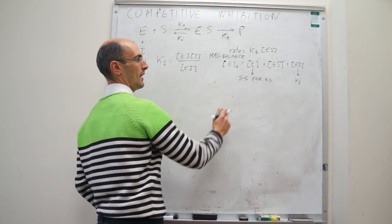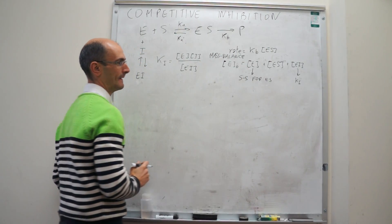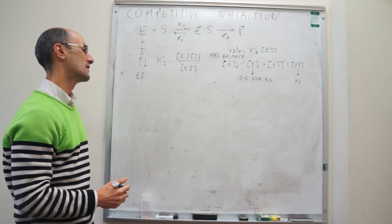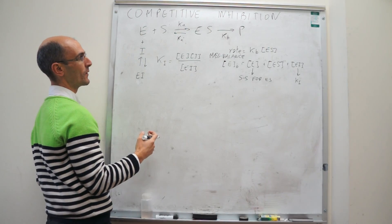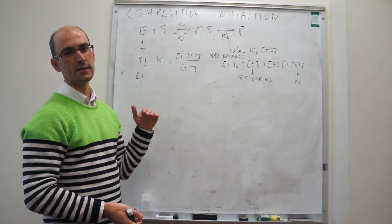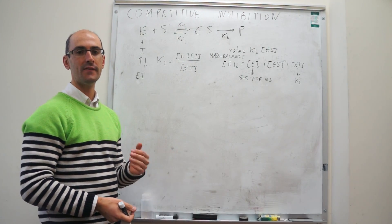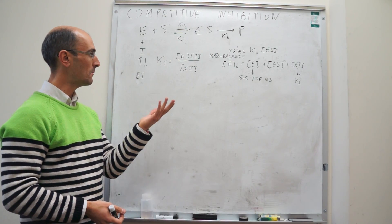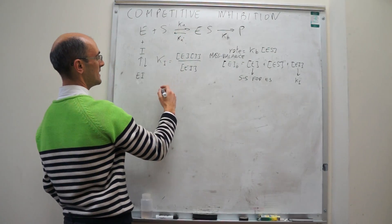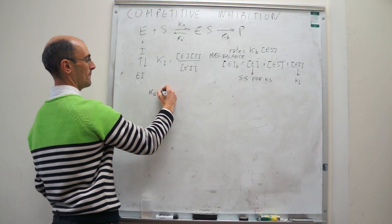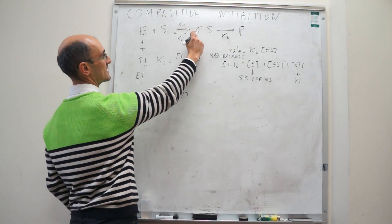Applying the steady-state approximation for the ES complex: the rate of processes that form ES must be identical to the rate of processes that remove ES, so that [ES] doesn't change in time. The only reaction that forms ES has rate K_A times [E][S]. There are two processes that remove ES: reaction to products with rate K_B[ES], and the reverse reaction with rate K_A prime times [ES].